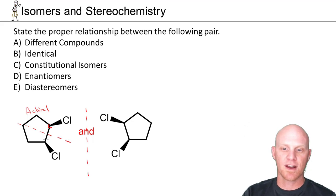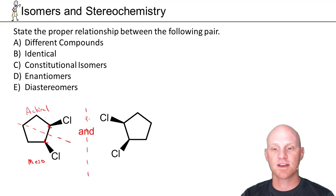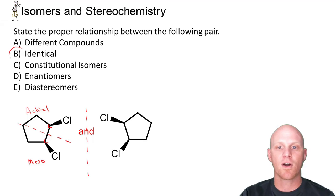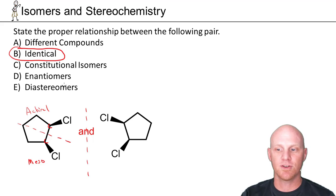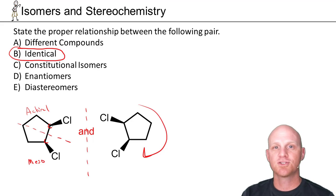You might also notice there are chiral centers, so more specifically it is the meso version — an achiral compound. For an achiral compound and its mirror image, they are identical, one and the same. You might just rotate this and find out they're perfectly superimposable.